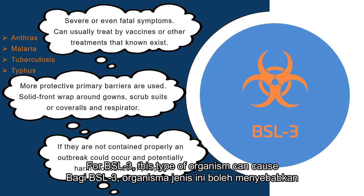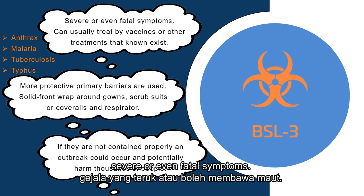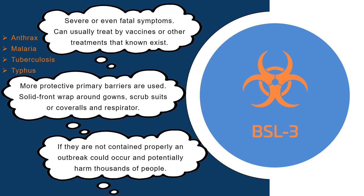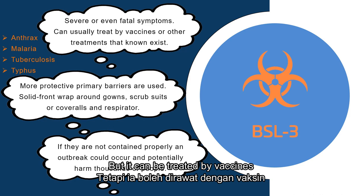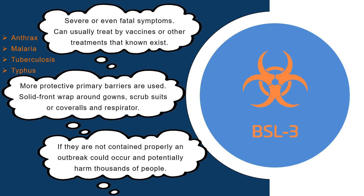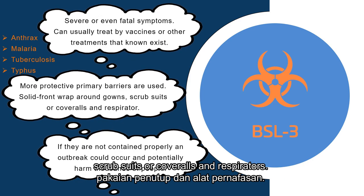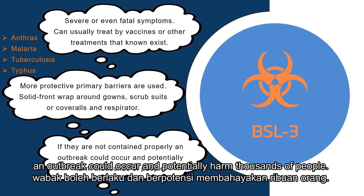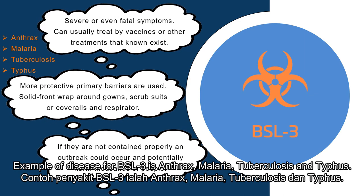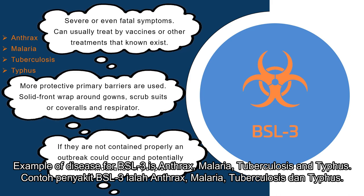For BSL-3, this type of organism can cause severe or even fatal symptoms, but it can be treated by vaccines or other known treatments. More protective primary barriers are used, such as solid front wrap-around gowns, scrub suits or coveralls, and respirators. If they are not contained properly, an outbreak could occur and potentially harm thousands of people. Examples of diseases for BSL-3 include anthrax, malaria, tuberculosis and typhus.